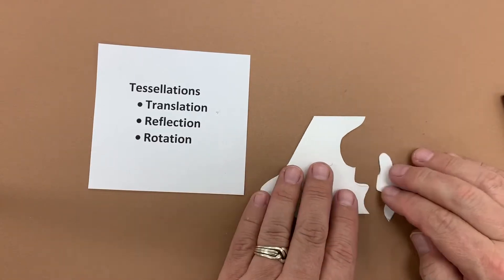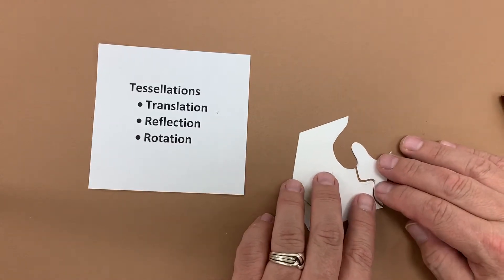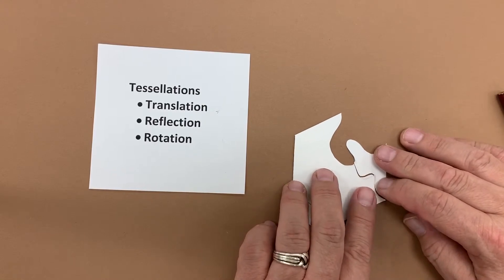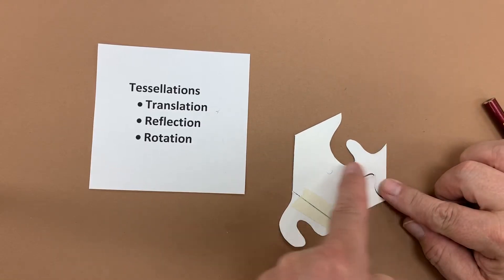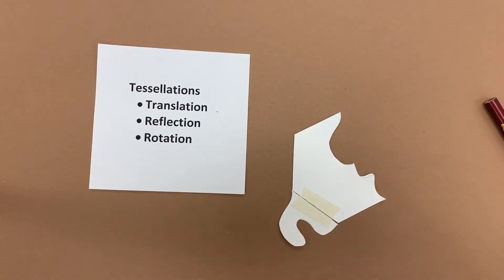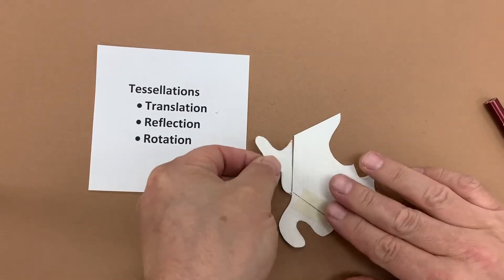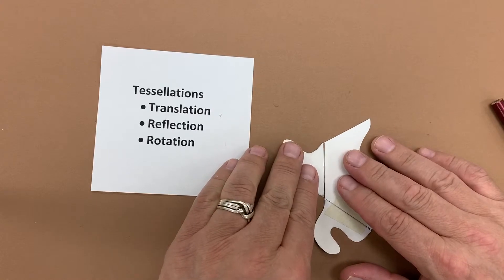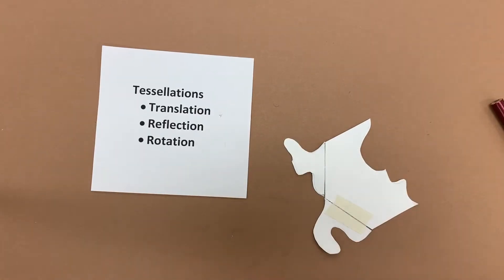Before I translate it I go ahead and line it up, make sure I'm in the right direction. Got it all lined up and I bring it straight across the piece. So it was here. I bring it across here and I add a little piece of tape.